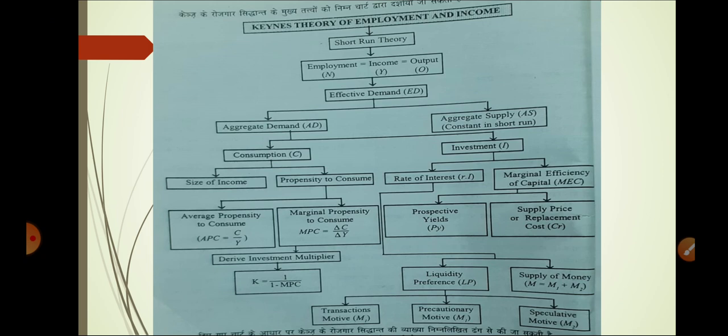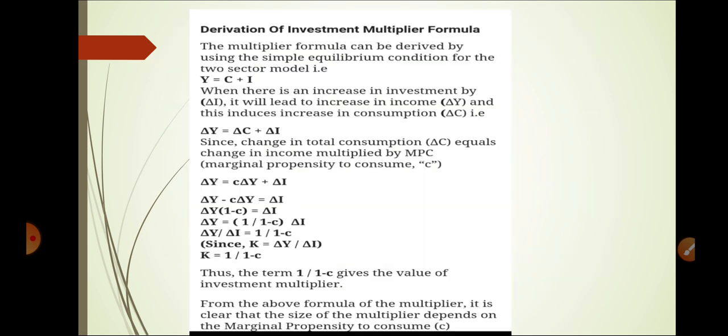Under propensity to consume, two things come: APC and MPC. APC is consumption divided by income, and MPC is equal to change in consumption divided by change in income. From MPC we derive the investment multiplier.